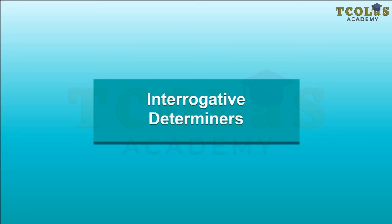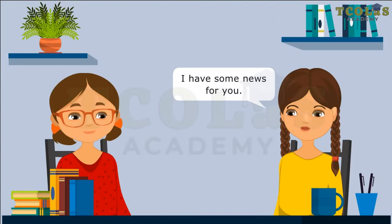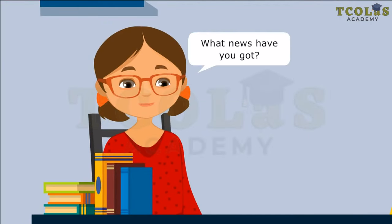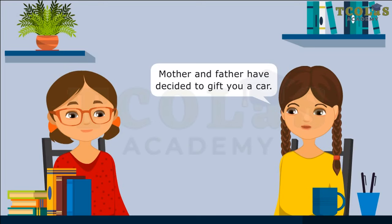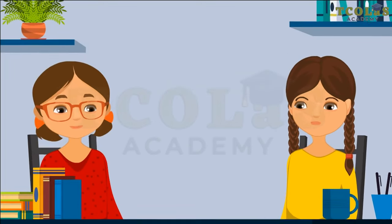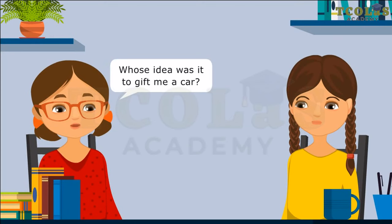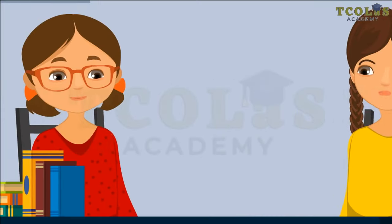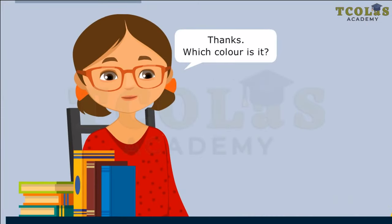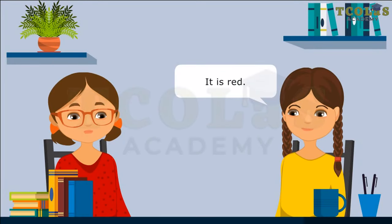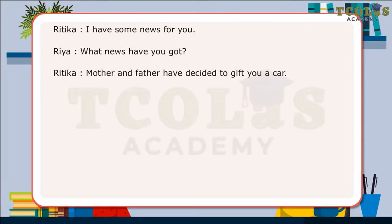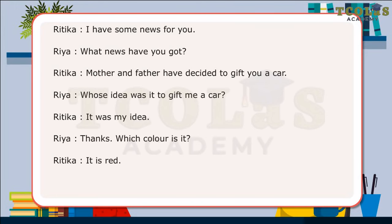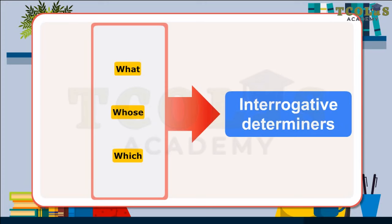Interrogative Determiners. I have some good news for you. What news have you got? Mother and father have decided to gift you a car. Whose idea was it to gift me a car? It was my idea. Thanks. Which colour is it? It is red. In the dialogues, the girls have used words that ask questions about the nouns that follow. The words what, whose, which are examples of interrogative determiners.